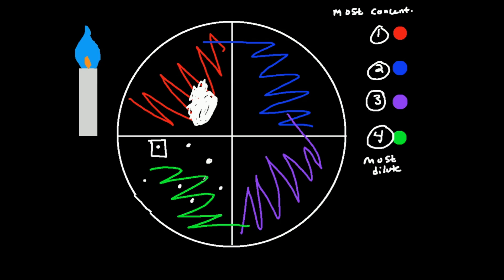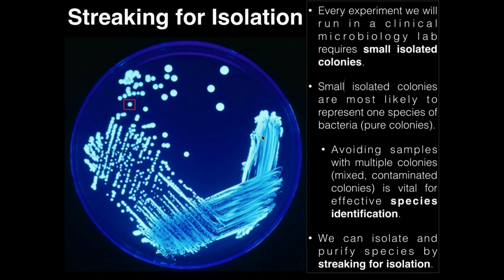Now let's switch back to the PowerPoint. Going back to this image, we see the small isolated colony boxed in red, which would be over in the fourth quadrant area. You can see here the first quadrant, the second, the third, and then up here is the fourth. That's why these are the most dilute here but the most concentrated over there. Hopefully you understand that now after watching the diagram.